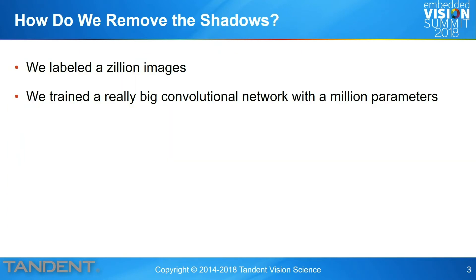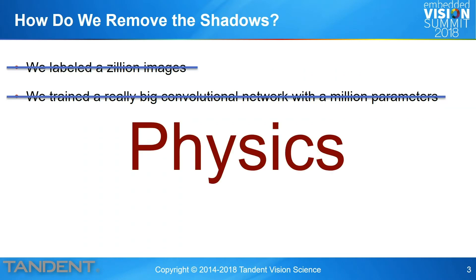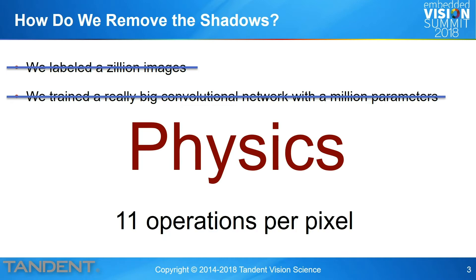How do we do this? We use physics — and we're doing it at 11 operations per pixel. For context, the previous talk showed a VGG8 neural network at 146 million operations per image, which is around 9,000 operations per pixel. We're doing this in 11 operations per pixel.